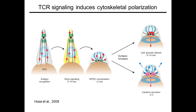This event sets up an axis of polarity within the T-cell that enables it to release soluble factors directionally toward the APC, which is important to maintain the specificity of secretory responses. Cytotoxic T-cells, for example, destroy infected target cells by secreting a toxic mixture of perforins and granzymes, and directional secretion allows them to do this without harming bystander cells.